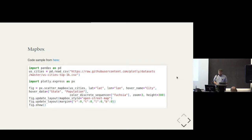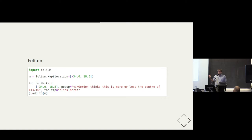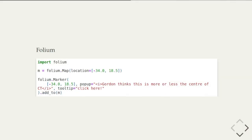It's a very popular option and I've seen lots of people use it. But to be honest, the one we tended to use is something called Folium. Folium is a library that wraps — it's essentially a collection of Jinja templates that wrap around the JavaScript library called Leaflet, which is probably the most popular open source web mapping library out there.